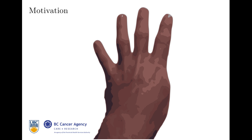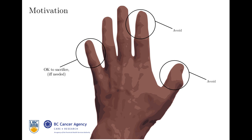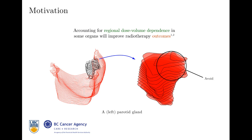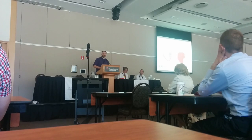There's something important here. You can think of the thumb and the index finger as being somehow more important to avoid damaging, but the pinkies will be a sacrifice if only if you need to. So this in fact is not my research, but it is related. It turns out that accounting for regional dose-volume effects in some organs will improve, or may improve, radiotherapy outcomes. That's an important finding. In this case we've got the left parotid.